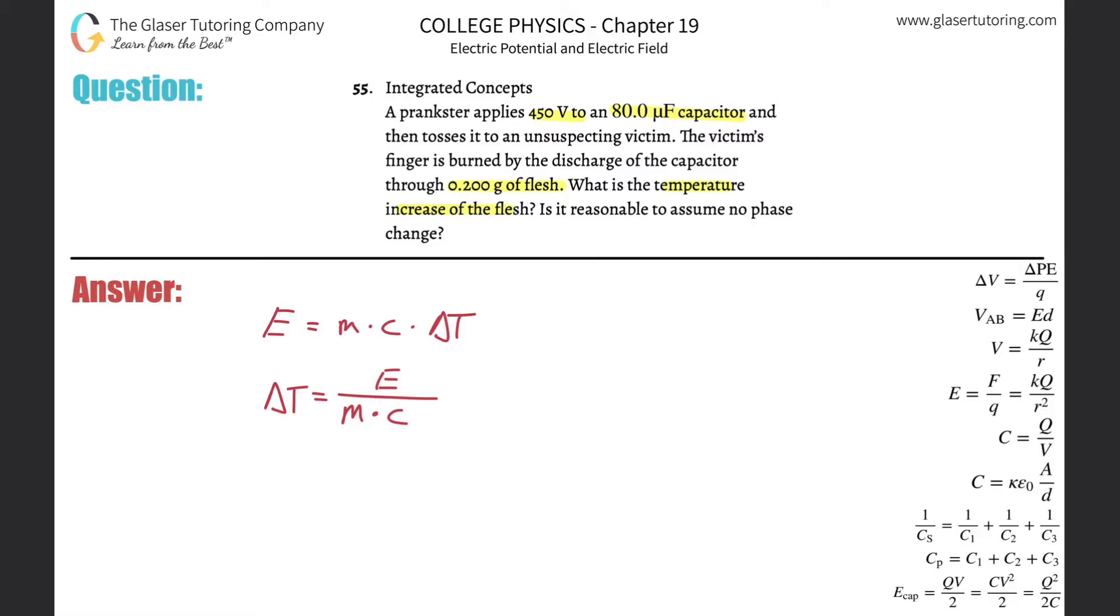So the mass they gave us, remember it has to be in kilograms. They gave it to us in grams, but we do need that in terms of kilograms. So we do know the mass here. That's going to be basically 0.2 times 10 to the minus 3 kilograms now.